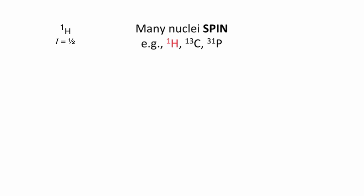Protons, for example, have a spin or i value of 1/2, and can have spin states -1/2 and +1/2.